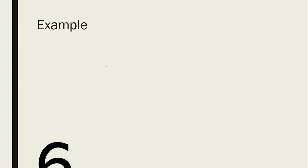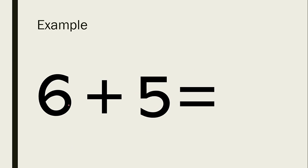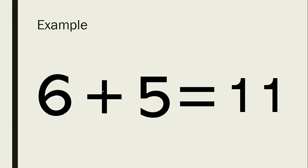Let's have these examples. For example, we have 6 plus 5. The absolute value of 6 is positive 6, and the absolute value of 5 is positive 5. So 6 plus 5 is positive 11. The two same signs here are both positive.